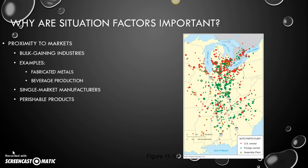The other concept is bulk gaining industries, where the final product actually weighs more and has larger dimensions than the original inputs. Looking at our map of the Midwest around the Great Lakes, we're looking at auto parts plants — red for US-owned, green for foreign-owned. The yellow dots are the assembly plants, where individual parts are put together to produce cars. Assembly plants are bulk gaining industries.